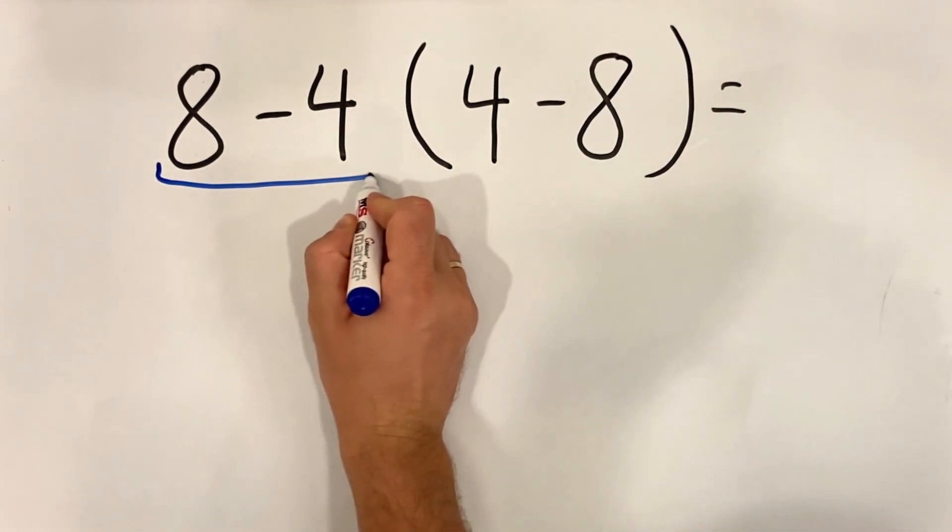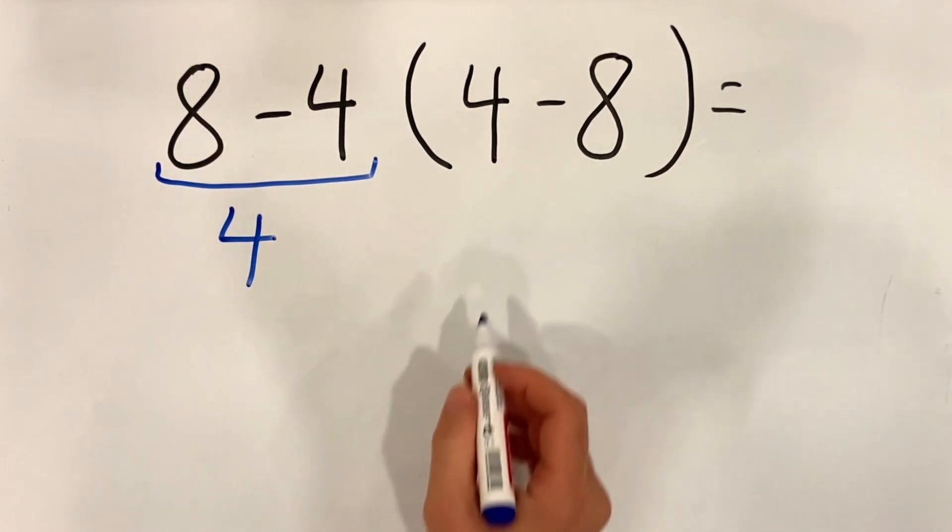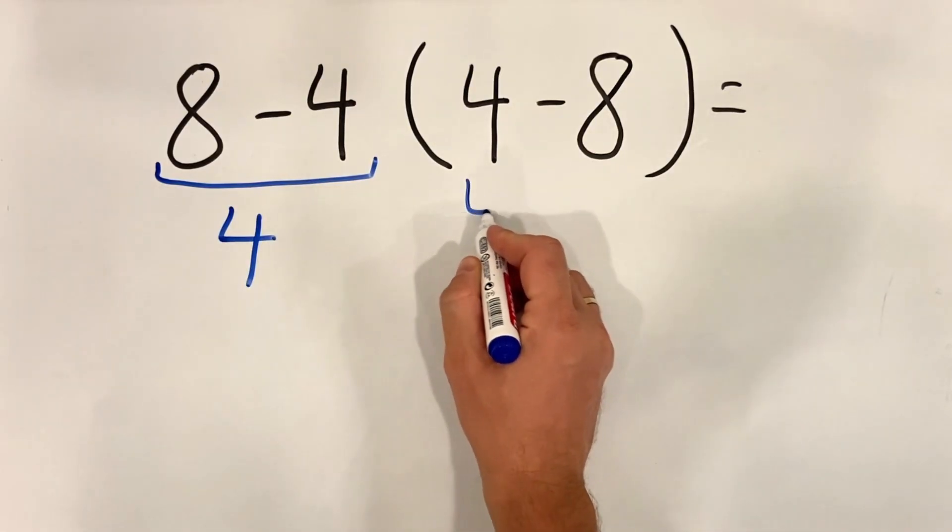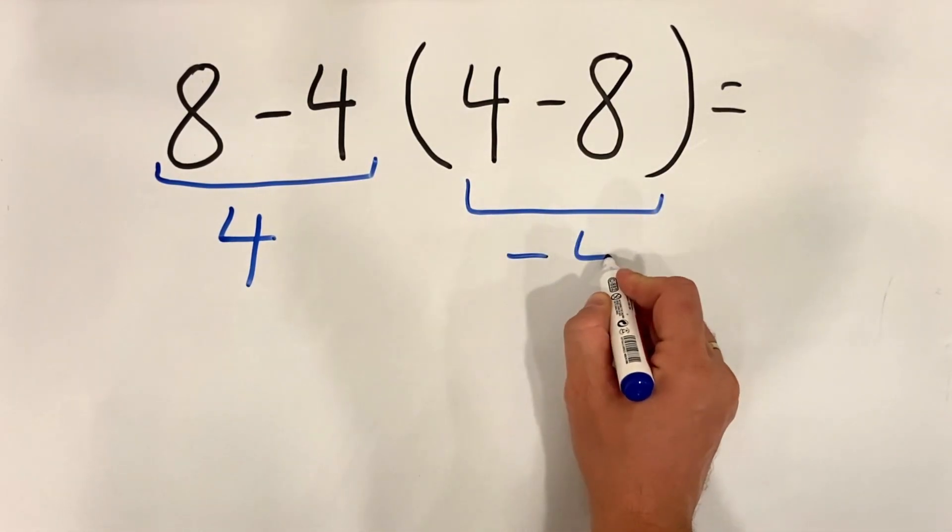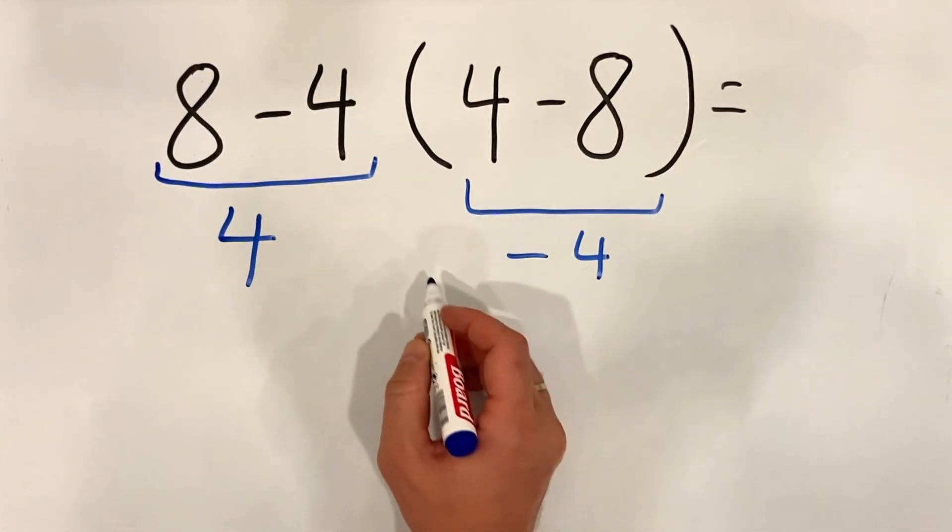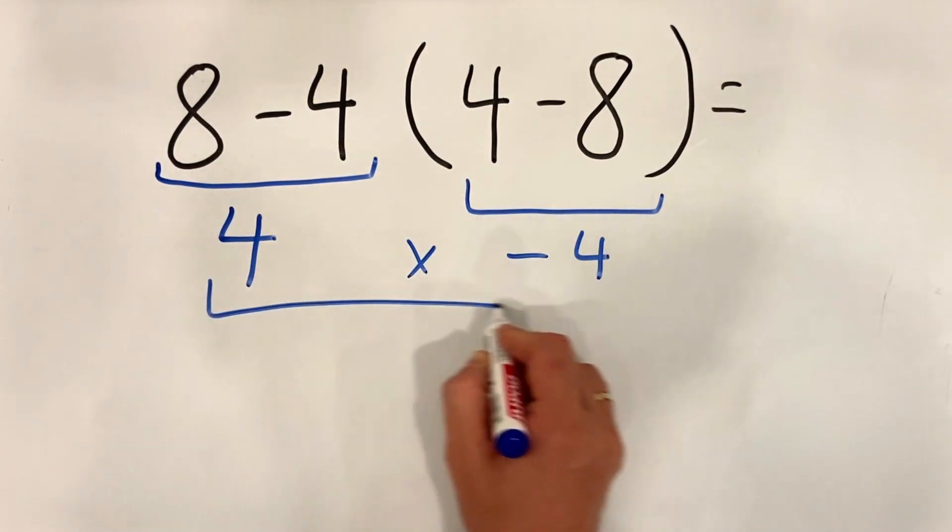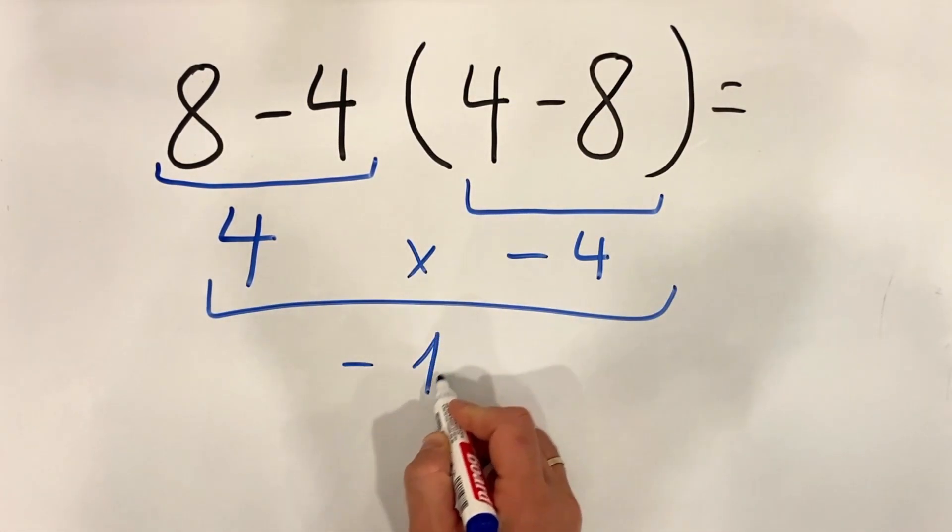Eight minus four equals four, four minus eight equals minus four, four multiply by minus four equals minus 16.